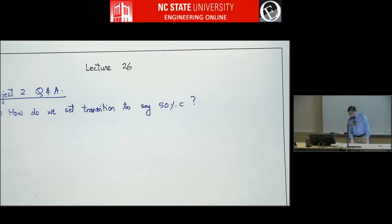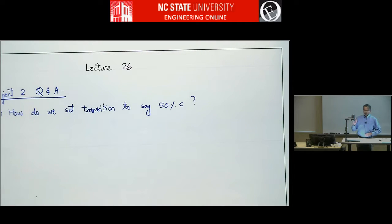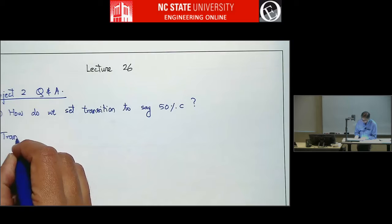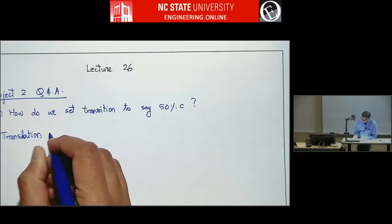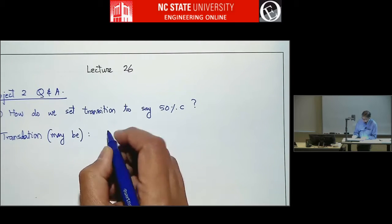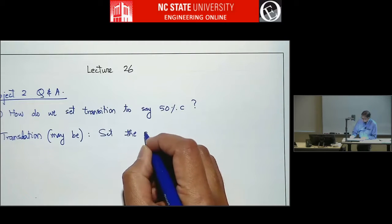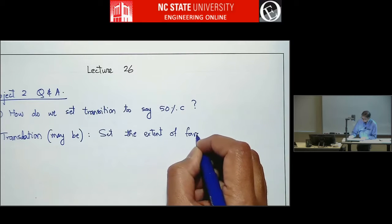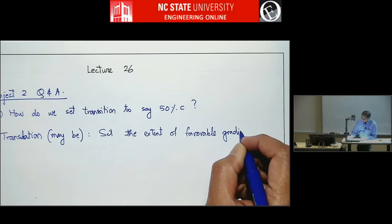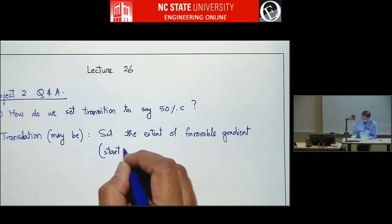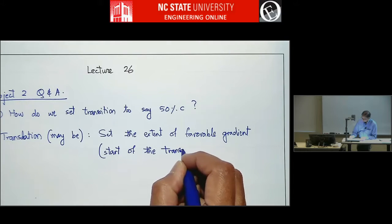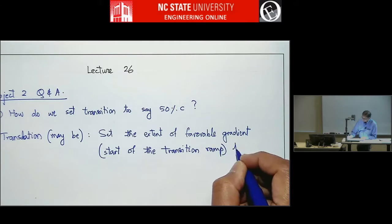I tried to clarify this in those red boxes that I drew on the assignment. This is hard to explain, so I'm not surprised if it's not completely clear. What I mean by this is: set the extent of favorable gradient — maybe this is a translation — which can be thought of as the start of the transition ramp, to 0.5C.